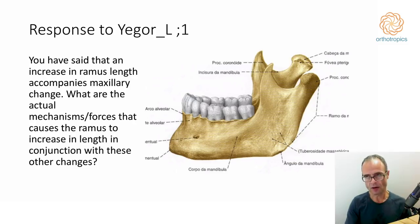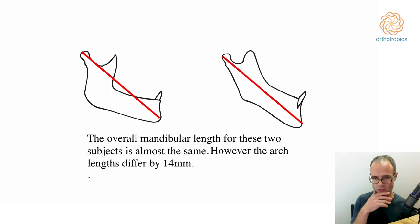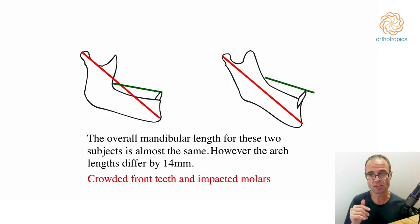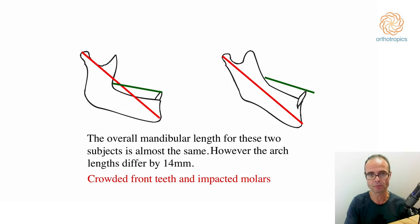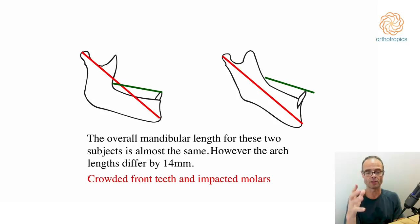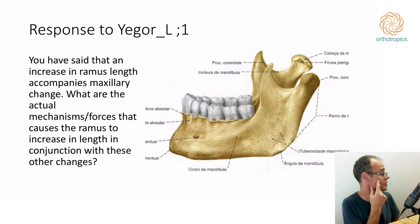What I think we're doing is changing the relative lengths of the ramus and the body. Looking at this image, it's the difference between these two shapes — the overall mandible length for these two subjects is almost the same, but the arch length differs by 14 millimeters. That's roughly what's happening, leading to crowded front teeth and impacted molars. The gonial angle is moving back, and there's only so much corridor for the ramus section to enter into the skull.